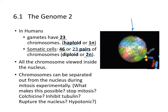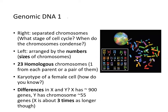Here is a diagram of karyotypes — all the chromosomes viewed inside the nucleus. Condensed chromosomes can be separated from the nucleus during mitosis experimentally. Mitosis can be stopped at the metaphase plate using compounds like colchicine, which inhibits tubulin depolymerization. To rupture the nucleus, you would use hypotonic conditions. On the right, you have separated chromosomes arranged from biggest to smallest — that's how chromosomes are numbered.